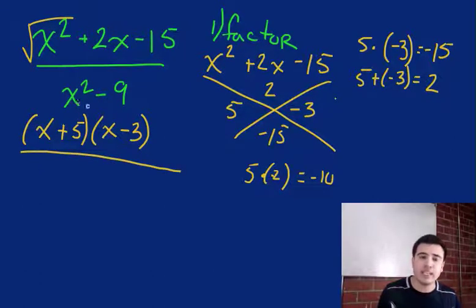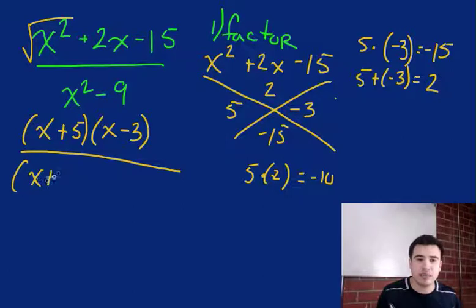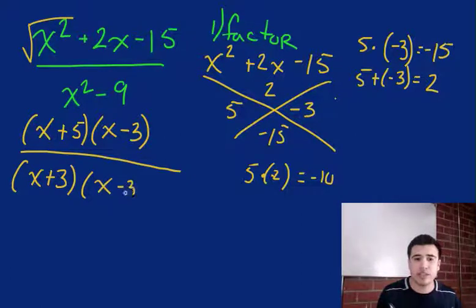Then we put that over, well, x squared minus 9, that's what you call a difference of squares. I'll go ahead and make a video for you guys on that. But that's x plus 3 times x minus 3, and there you go.